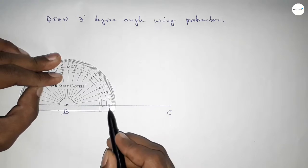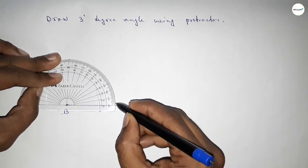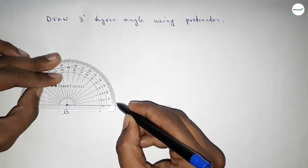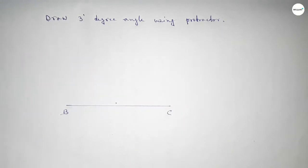Now putting the protractor on the point B and counting 3 degrees. So this is 0, 1, 2, 3. So this is 3 degree angle.